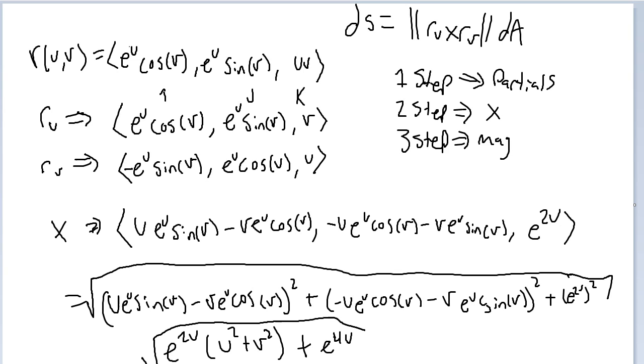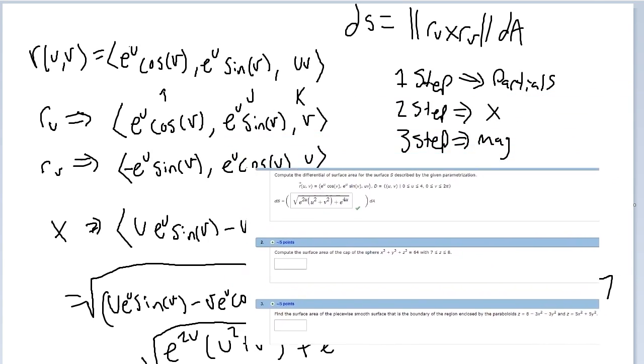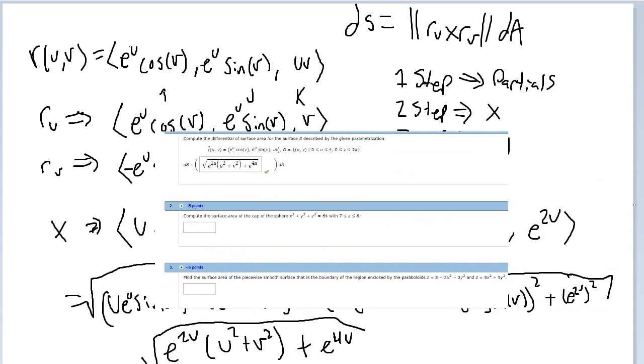So let's type it in. This is square root e to the u, u squared plus v squared plus e to the 4u.